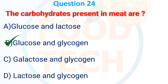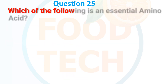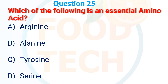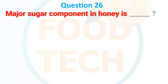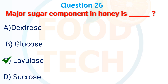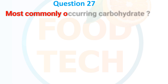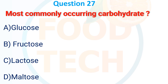Question 22: The carbohydrates present in meat are — A. Glucose and Lactose, B. Glucose and Glycogen, C. Galactose and Glycogen, D. Lactose and Glycogen. The answer is B. Glucose and Glycogen. Question 23: Which of the following is an essential amino acid? A. Arginine, B. Alanine, C. Threonine, D. Serine. The answer is A. Arginine.